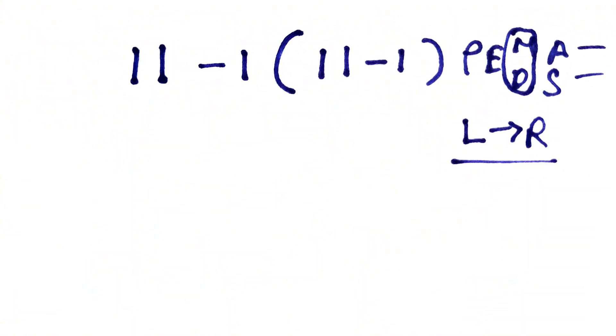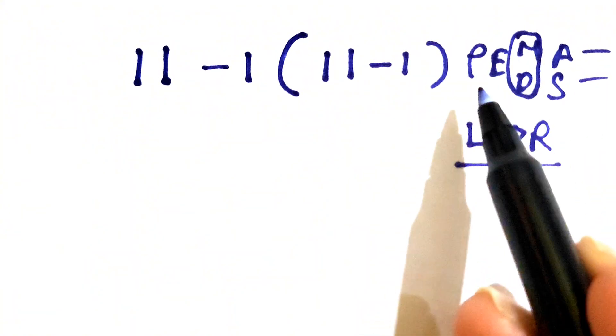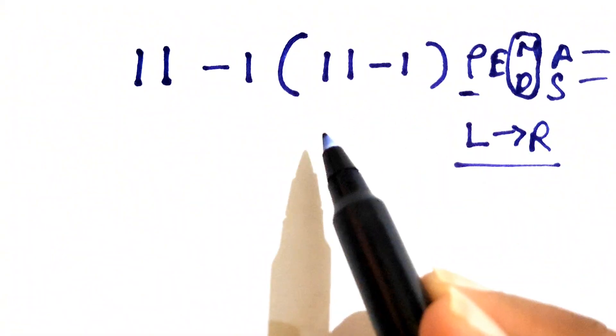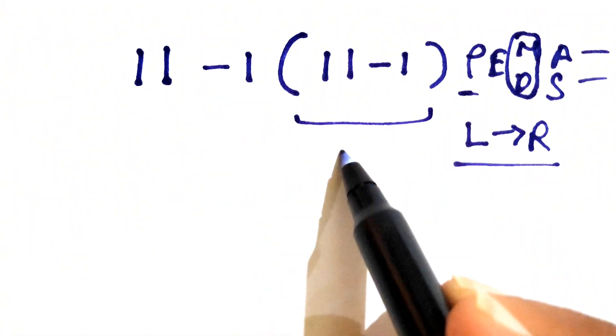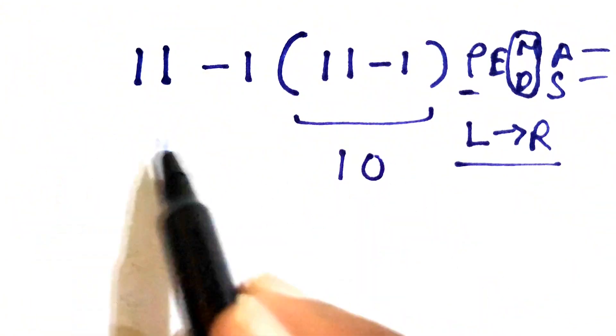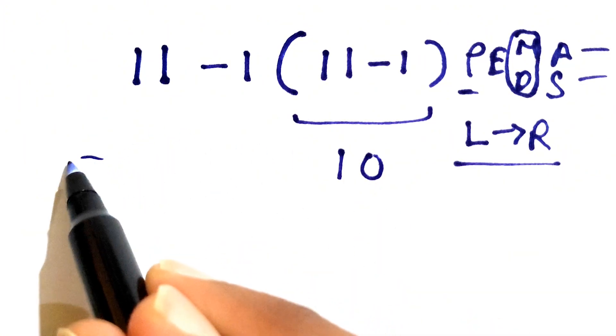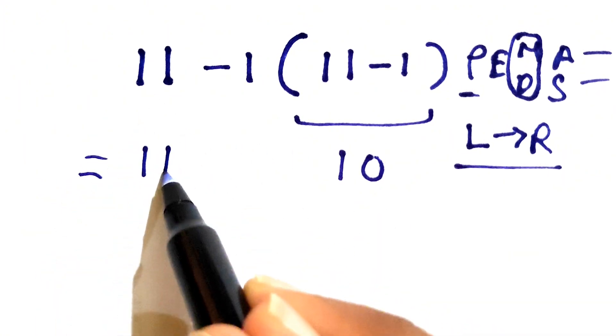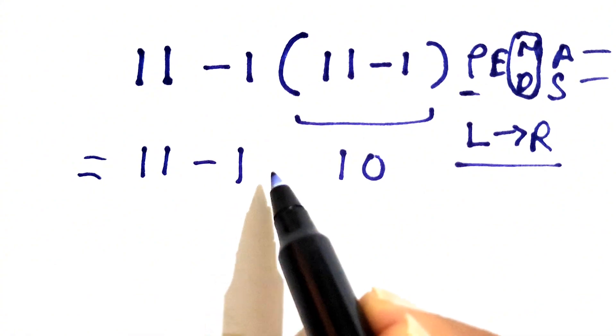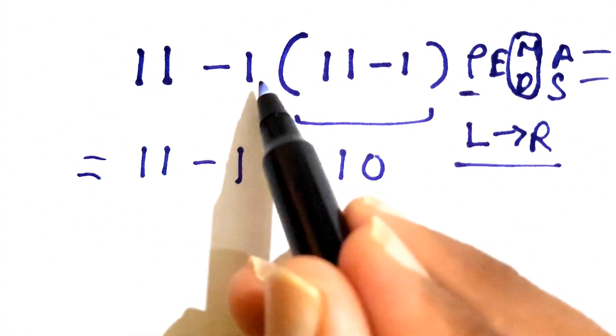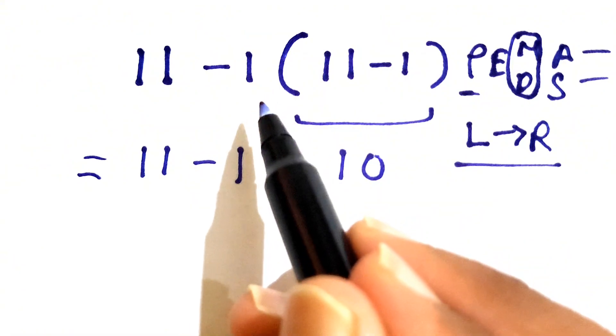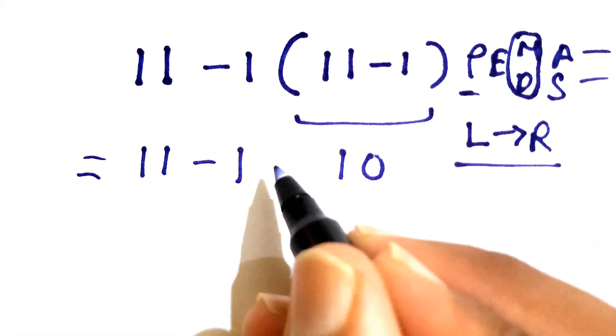First we need to solve the parenthesis, that is this 11 minus 1 that gives us 10. Now we write the expression once again to make the confusion less. So write this 11 minus 1, and there will be multiplication because the number near the parenthesis is considered as multiplication, so 1 times 10.